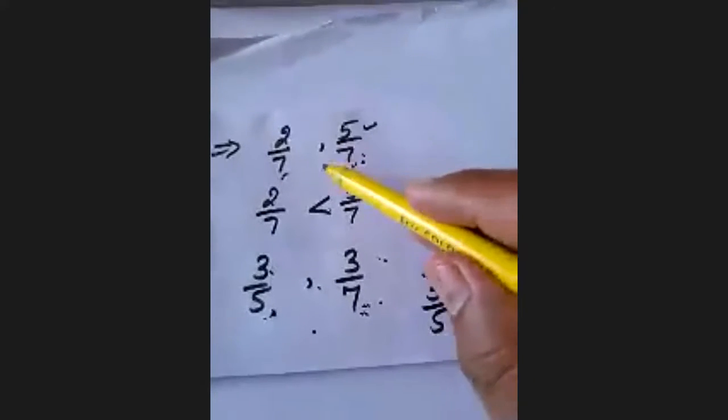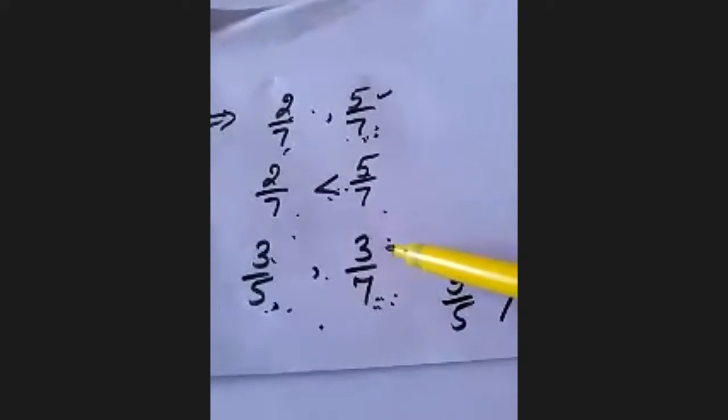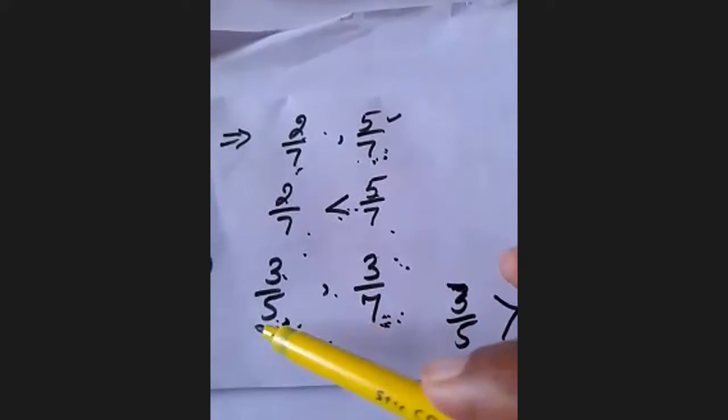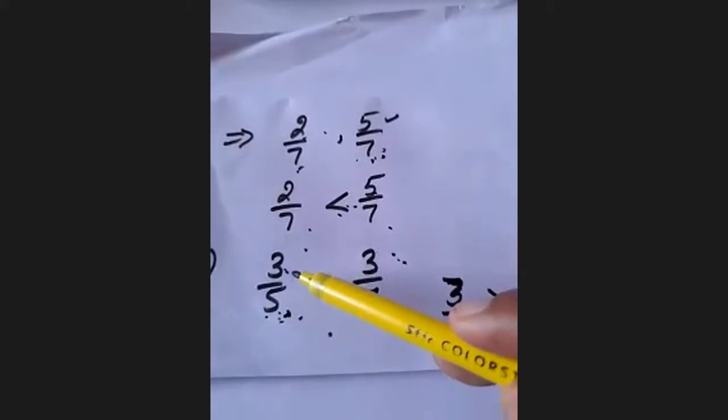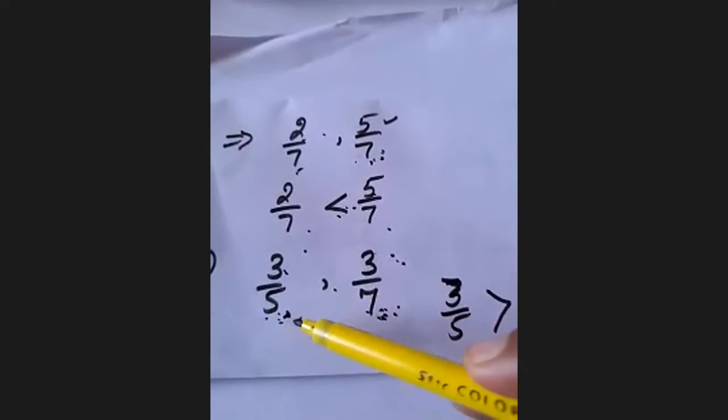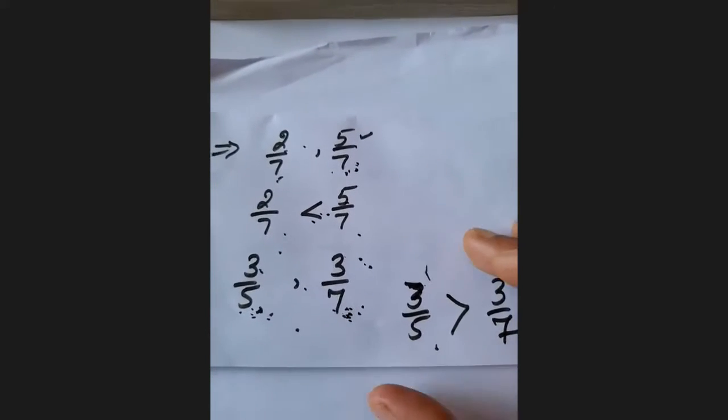So there are two conditions. In the first condition, when the denominator is the same — for example, both are 7 — you just compare the numerators: 2 is less than 5, so 2 upon 7 is less than 5 upon 7. In the second case, 3 upon 5 and 3 upon 7, when the numerator is equal, we compare the denominators: 5 and 7. Since 5 and 7 are denominators, 5 is considered greater than 7, meaning 3 upon 5 is greater than 3 upon 7. In this way, we can compare these fraction numbers.